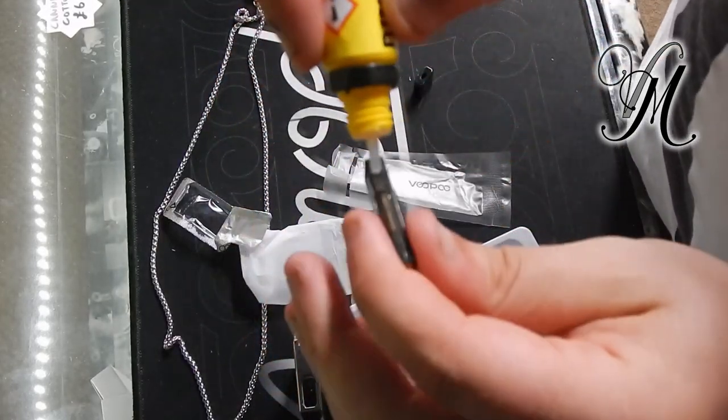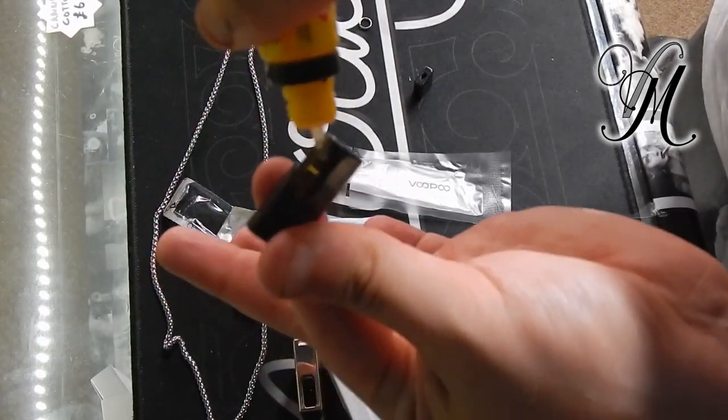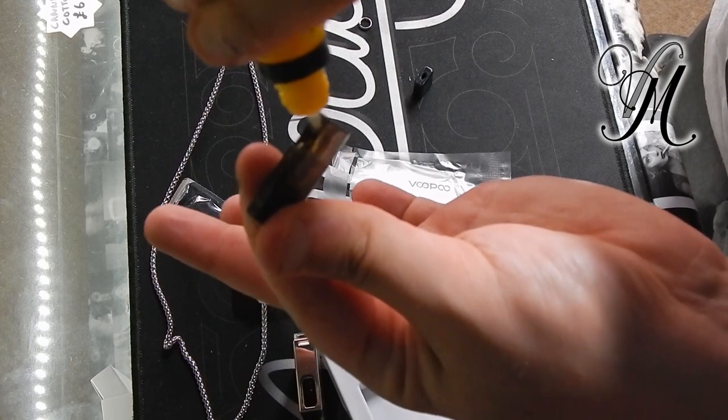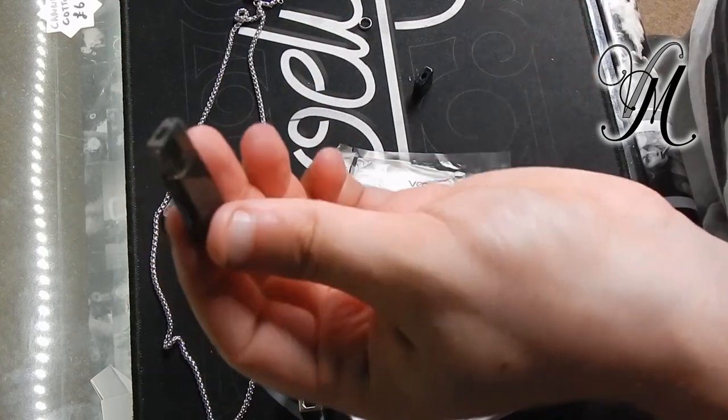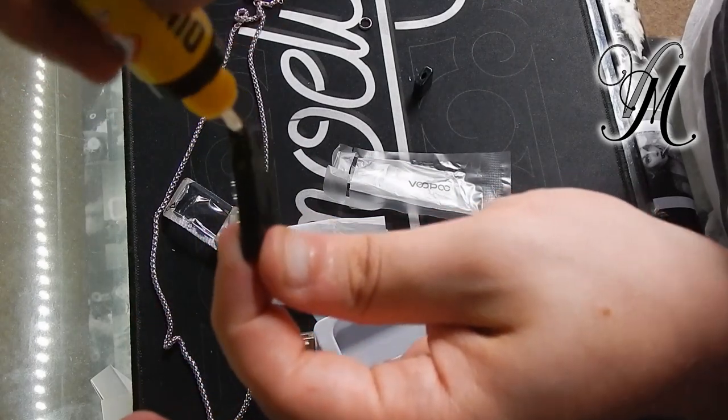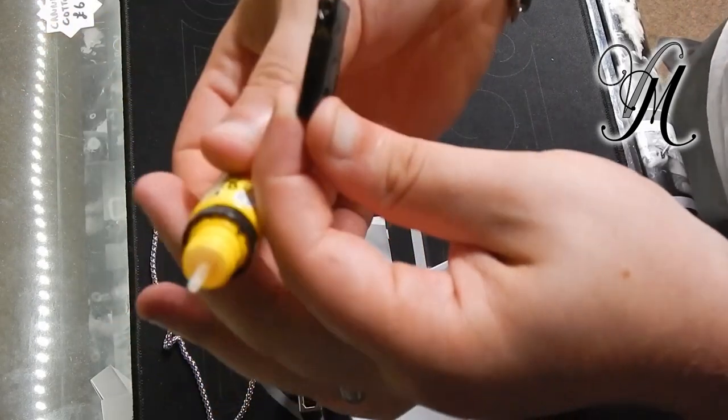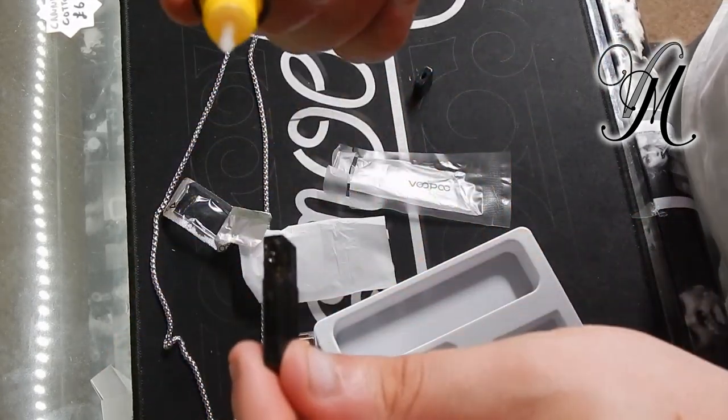PG-VG, VG-PG. Pour in your liquid. Nice and slow. Steady. I would say this is a bit of faffing, but I think it's pretty much the same with all pod systems.